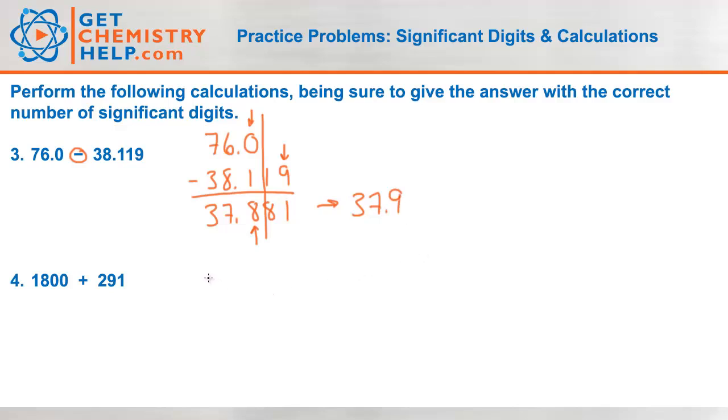How about 1800 plus 291? Whenever you're adding or subtracting, I find it easier to go ahead and line them up by their places. I'm going to take 1800 and I'm going to line up the 2 with the hundreds place, the 9 with the tens place, the 1 with the ones place. Add those together and that gives me 2,091. We're adding those so it's not just sig figs like 2 and 3, it's the places.